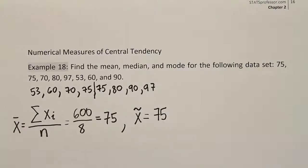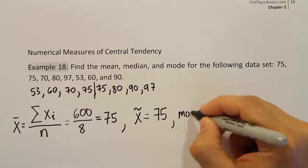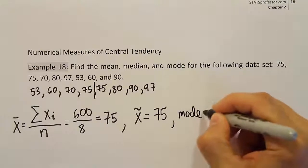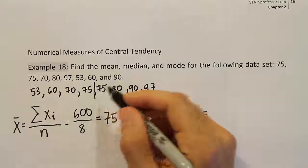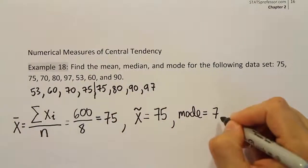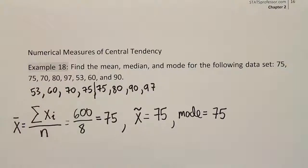And lastly, the mode. The mode is very simple — it's just the most repeated value in the list, if there even is one. In this case there is: the most repeated value is 75. So it looks like for this data set, the mean, the median, and the mode are all the same value: 75.